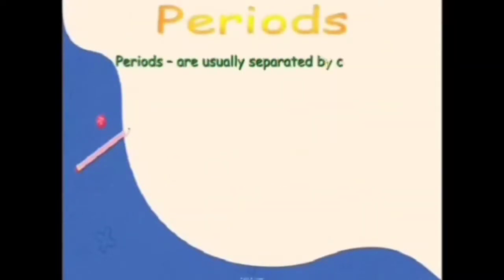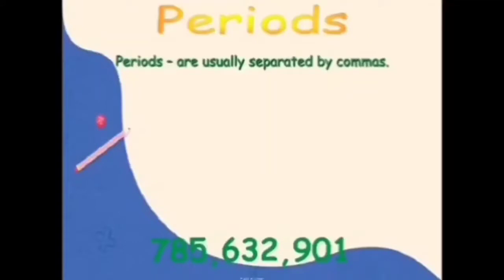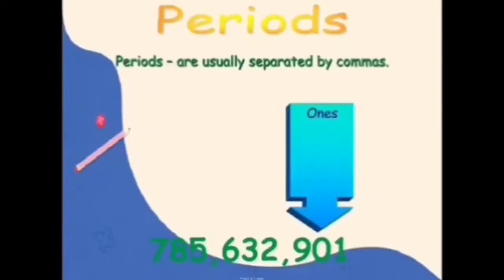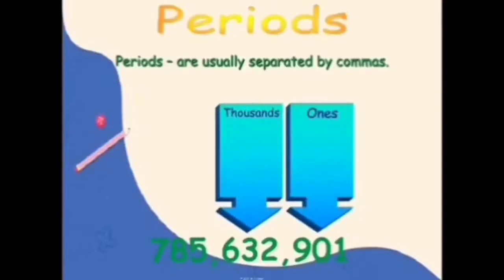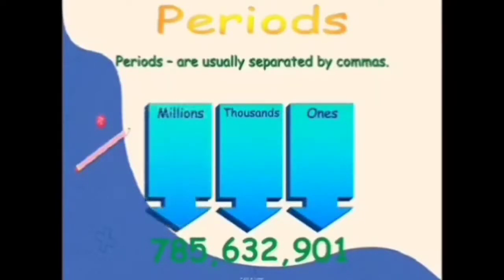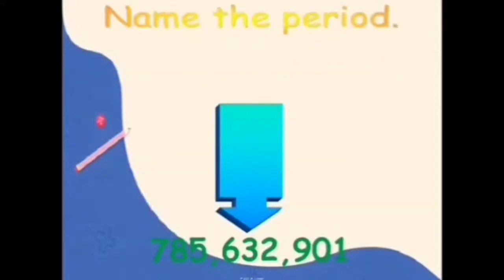Now let's see what periods are. Periods are usually separated by commas. Using the number 785,632,901, this number consists of 3 periods. Three digits make 1 period. Our first period is ones, our second period is thousands, and our third period is millions.